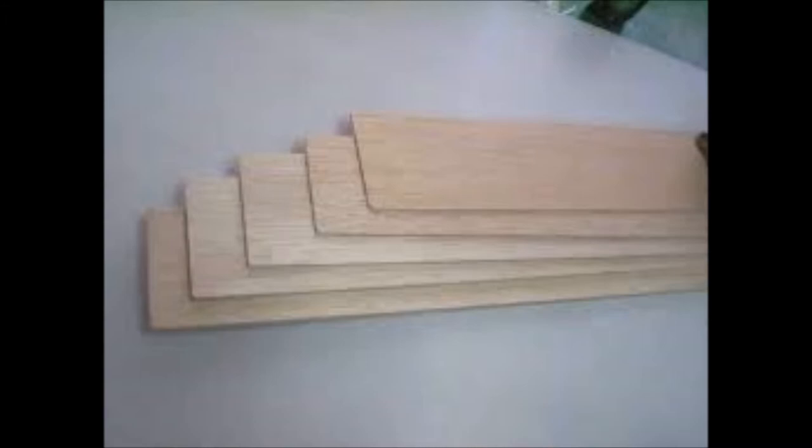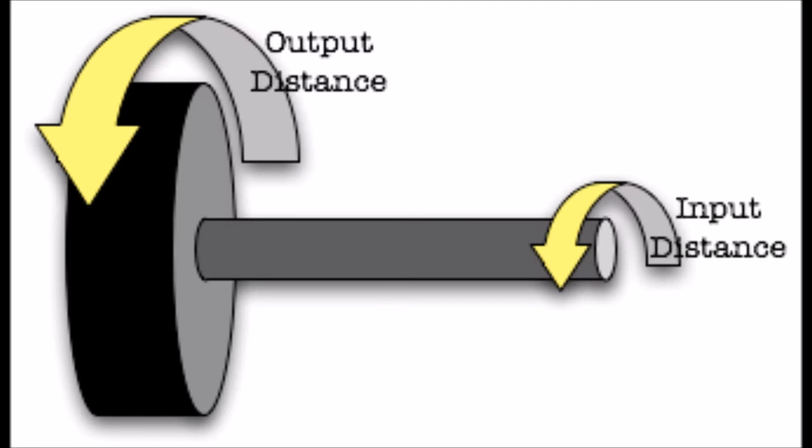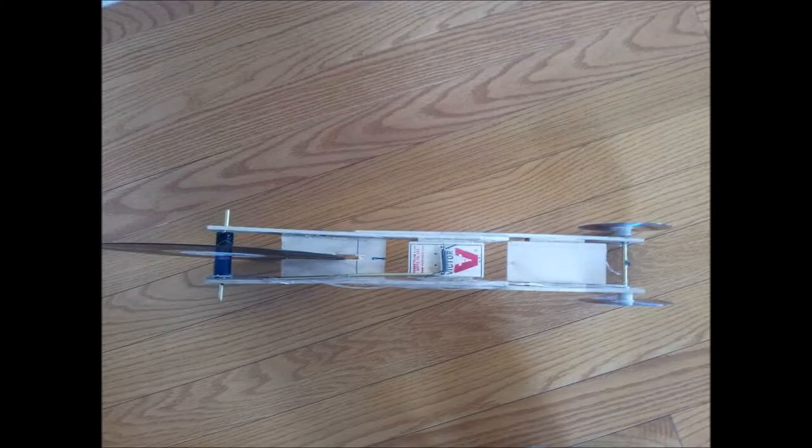We decided to have two regular CDs and one record as our wheels because this made the mechanical advantage larger. When trying to gain distance, the mechanical advantage should always be larger than one, since the output wheel will spin slow but have more torque to push the car further. Even though we did change many aspects of the design while rethinking, we decided to keep most of the frame.